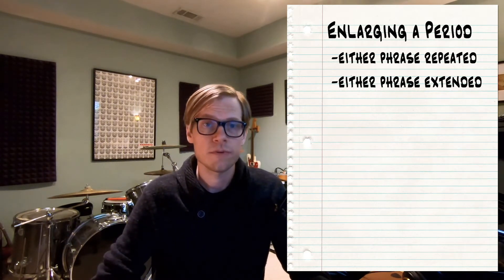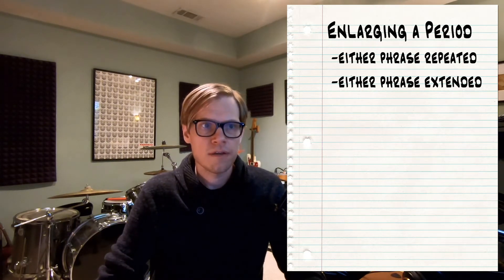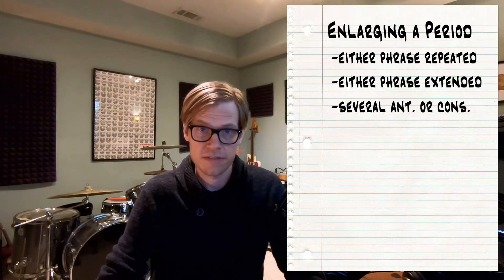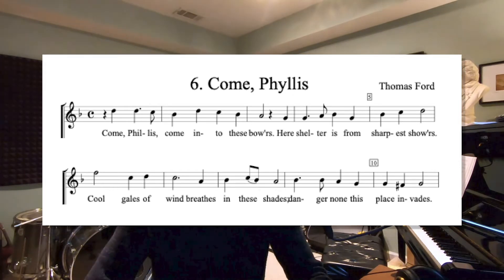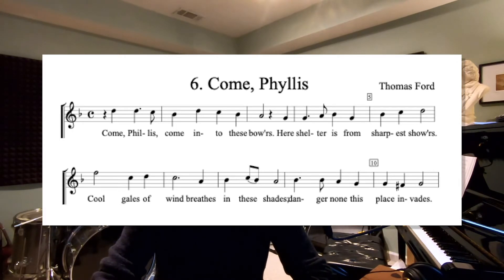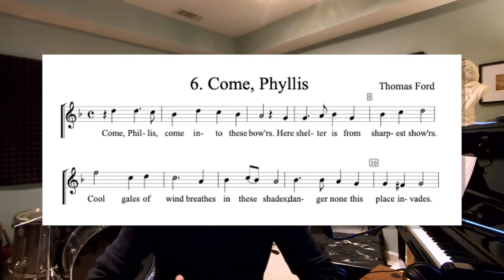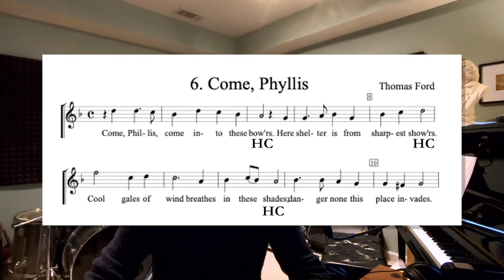Similarly to the string quartet example we looked at where the antecedent was repeated once, you can also have just a number of antecedent phrases. Here's an example of a song by Thomas Ford — this example is in your Barry textbook. In this example he uses a series of half cadences to sort of pause the music between each sentence of text, and he does this three times before finally concluding on a perfect authentic cadence. Keep in mind that these different ways of extending or enlarging the period can be used together and in conjunction.